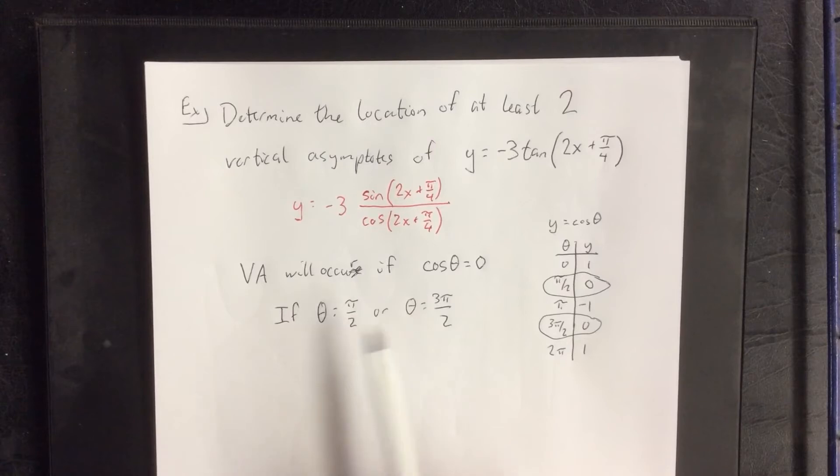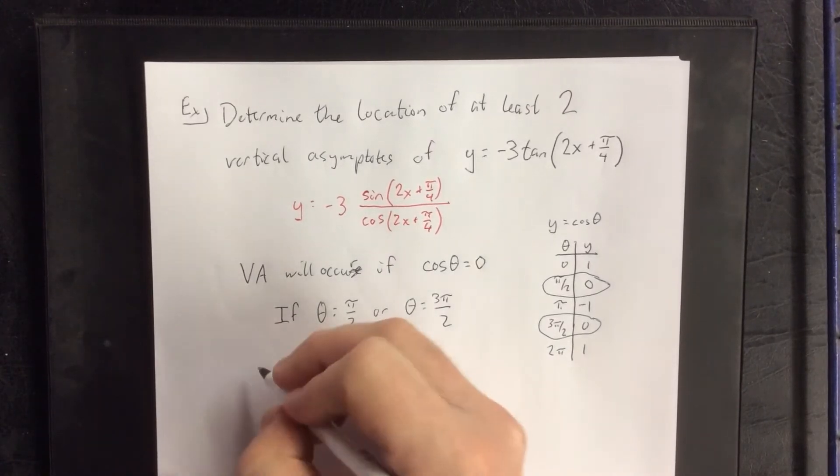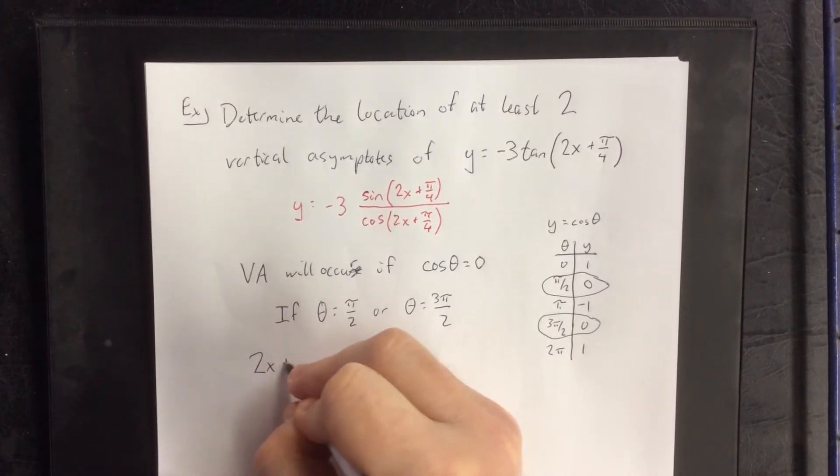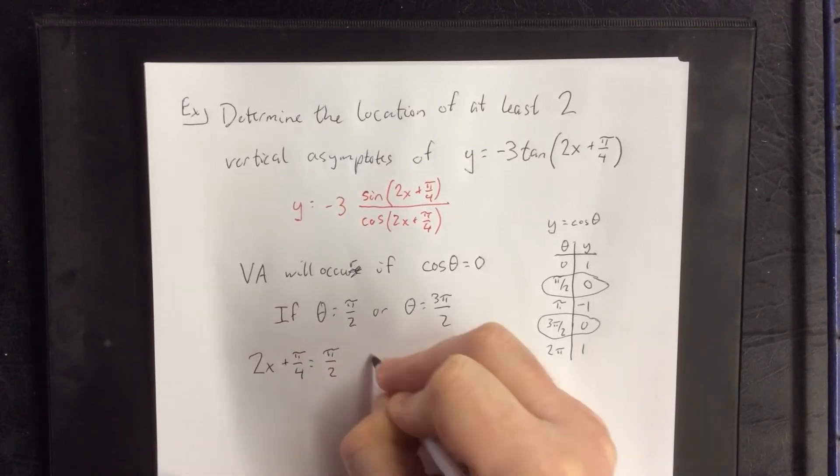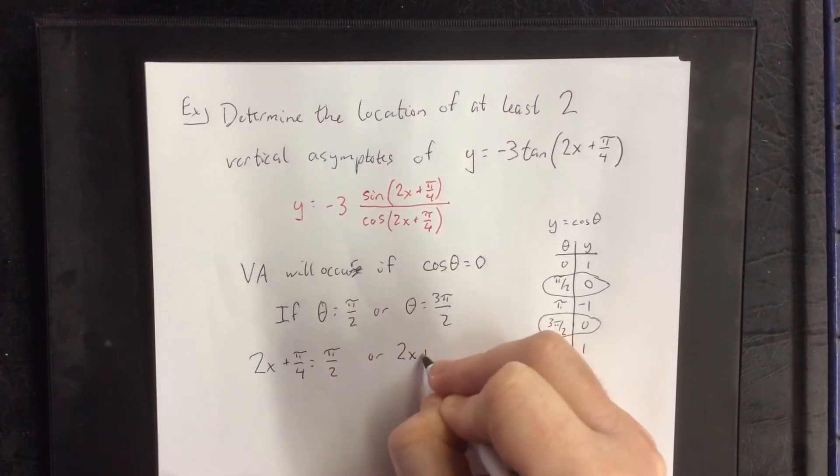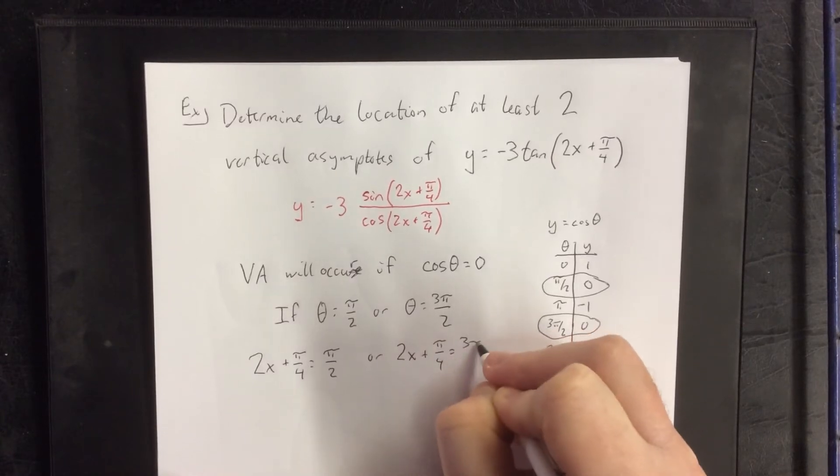In this example, though, theta is referring to the angle on the inside of the cosine. So what we're really saying is that if 2x plus pi over 4 is equal to pi over 2, or if 2x plus pi over 4 is equal to 3 pi over 2.